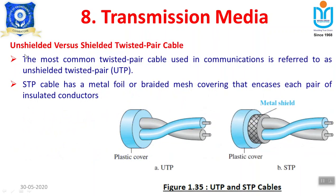Twisted pair wires come under two categories: unshielded twisted pair (UTP) and shielded twisted pair (STP). In unshielded twisted pair, the wire is simply covered with a plastic cover. The problem with unshielded twisted pair is there is a possibility of more interference. That is why we go for shielded twisted pair, where a metallic shield covers the wire and an outer plastic jacket provides additional protection, so disturbance and noise are reduced.